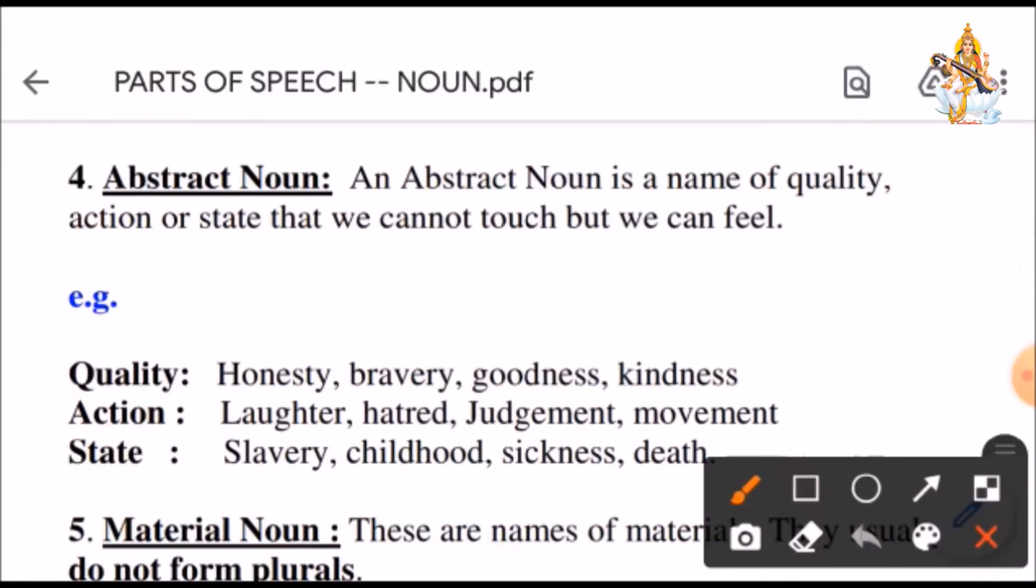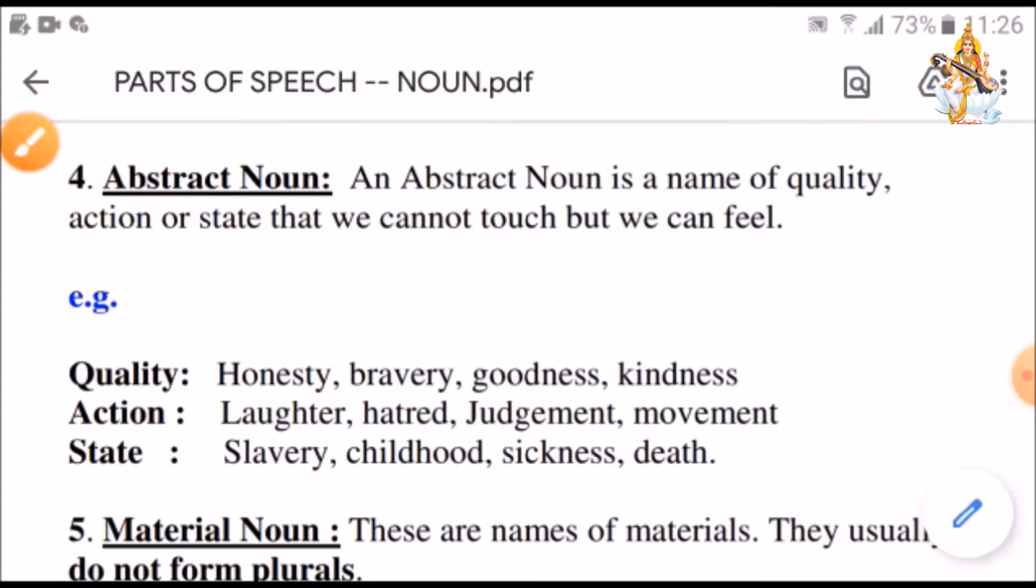Next comes abstract noun. An abstract noun is a name of quality, action or state that we cannot touch but we can feel. So, abstract noun cannot be seen, it cannot be touched, it can be only felt.